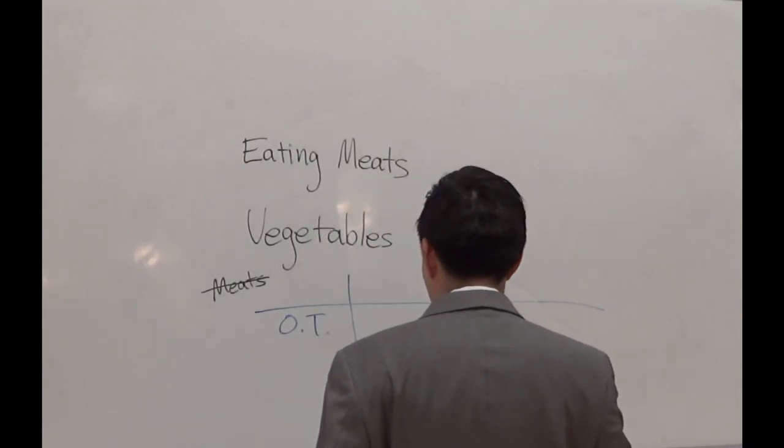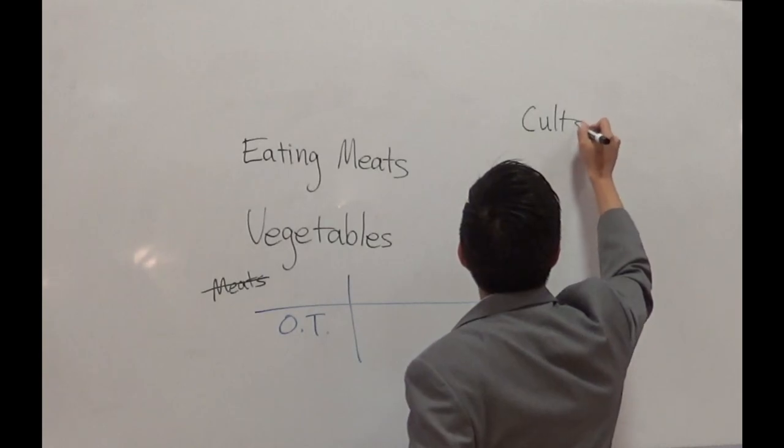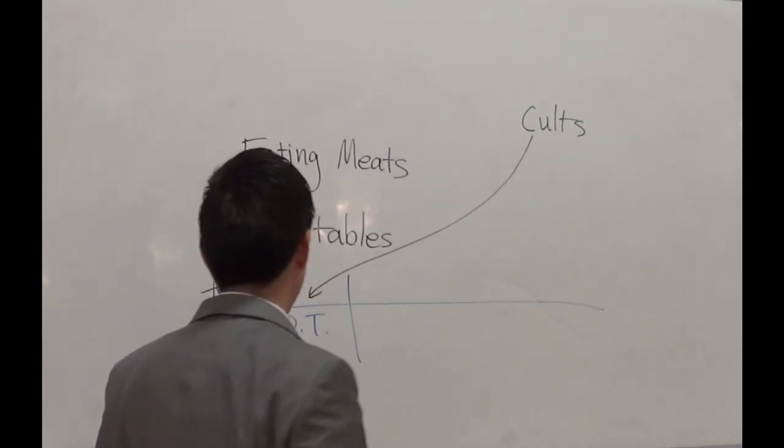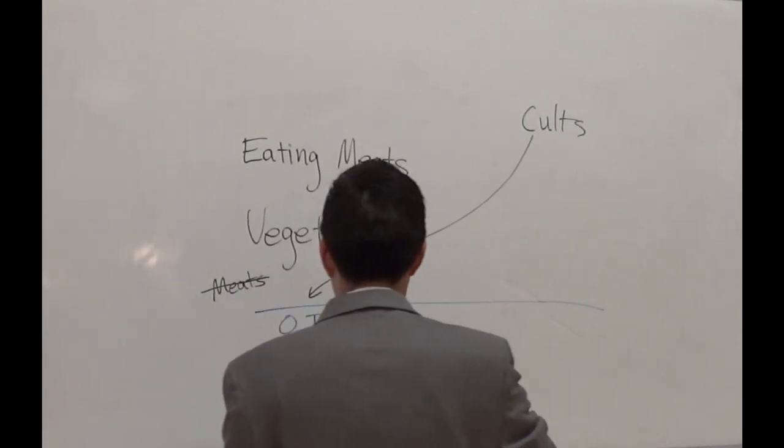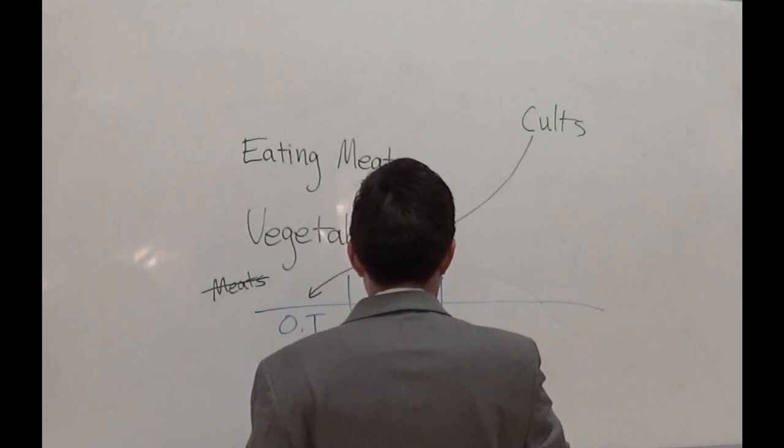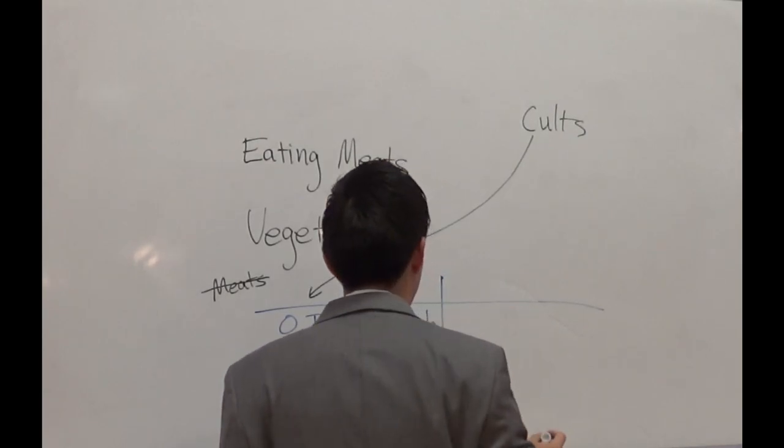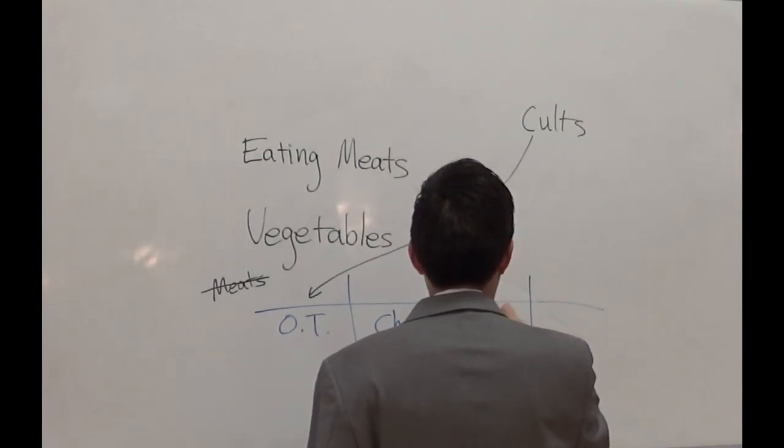So, cults, what they like to do is look at the Old Testament portion. By focusing on the Old Testament portion, you are not allowed to eat meats. The church age, however, we believe that you can eat meats or anything that you want.